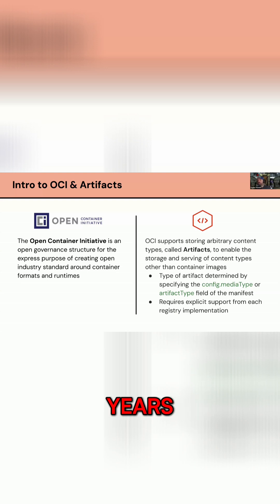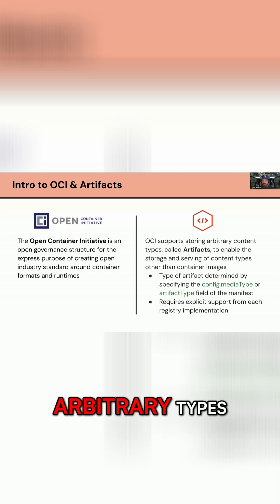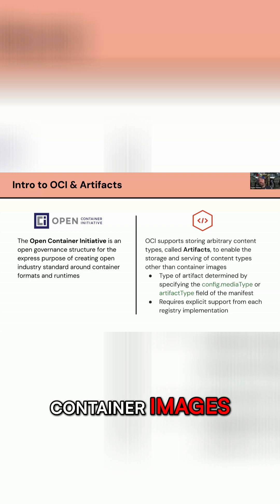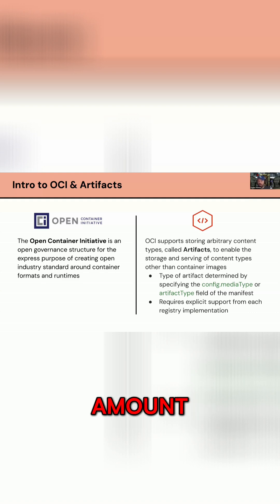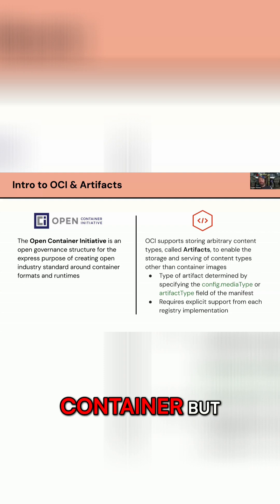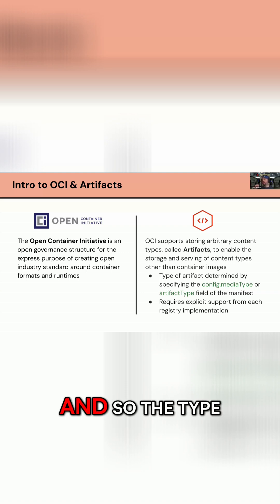Over the past few years, OCI has built up support for basically arbitrary types, which we call artifacts. You can store and serve things that are other than container images. If you've used Helm for any significant amount of time, I remember when we added the OCI feature there — that was kind of one of the first use cases people had of pushing something that wasn't a container, but container adjacent, for artifacts.